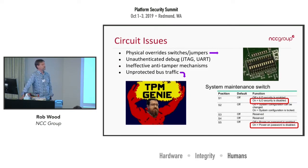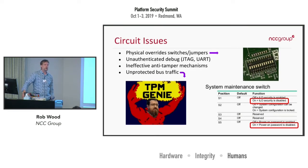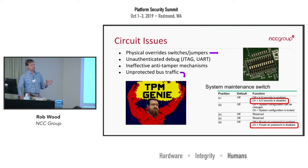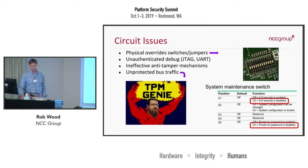Unauthenticated debug — UARTs and JTAG — often give root shells or UEFI shells. Anti-tamper mechanisms are almost always not very good. Anti-tamper really just increases the cost of developing an exploit, but almost never increases the cost of executing an exploit. If you can afford to buy one machine and sacrifice it, you can run your exploit much more easily the second time. TPM Genie is effectively a proof-of-concept interposer that sits between the TPM and the host processor, allowing you to manipulate all the traffic and bypass all the security functionality of the TPM. It's really just one example of a broader class of attack where you've got some unprotected data bus on your circuit board.